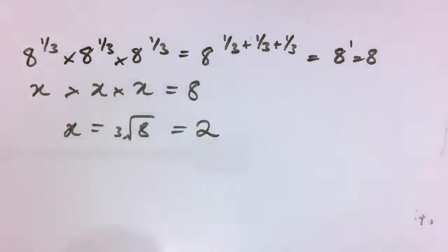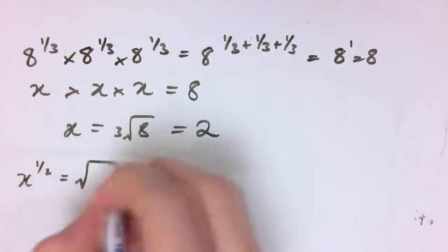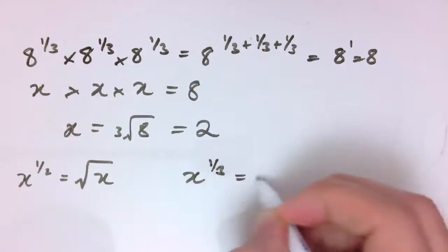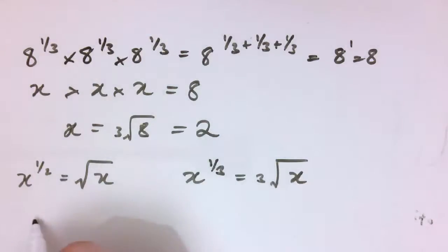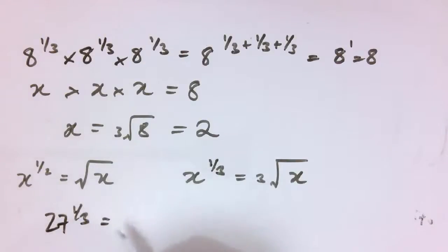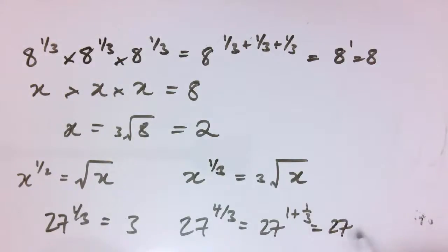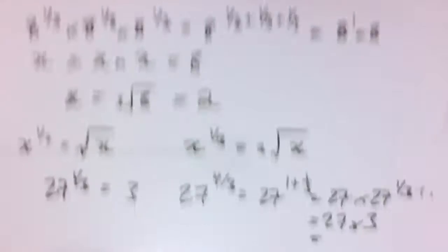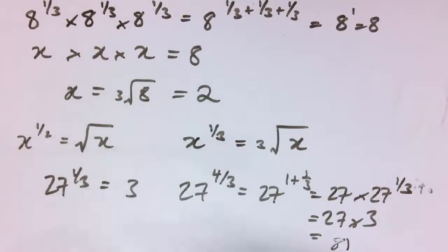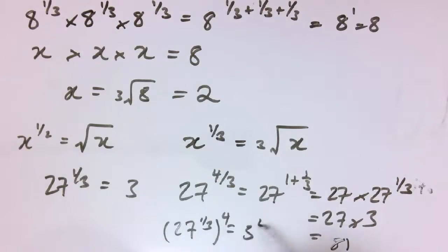Just as x to the 1 half is the square root of x, we've got x to the 1 third is the cube root of x. So 27 to the 1 third would be 3. We could also have 27 to the 4 thirds, which is 27 to the 1 and a third — that's 27 to the 1, which is 27, times 27 to the 1 third, which is 3, giving 81. We could also get there by saying it's 27 to the 1 third all to the 4, which is 3 to the 4, and that's also 81. Everything here is consistent.